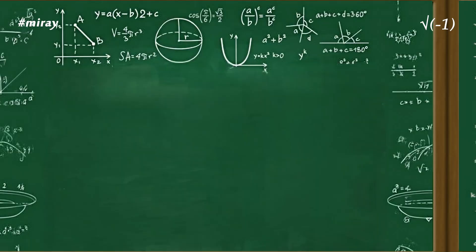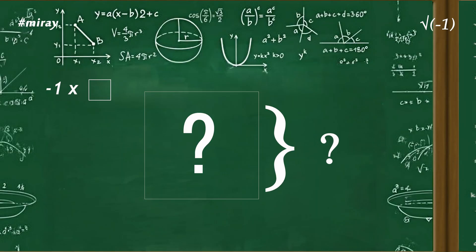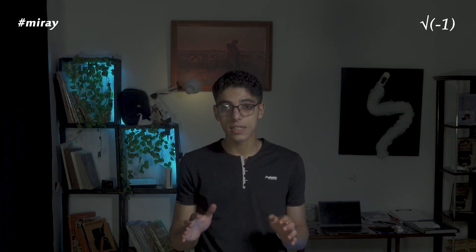The problem comes when I ask you: what is the square root of minus 1? What number multiplied by itself gives minus 1? Back to our square analogy — if you had a square with an area of negative 1, what would each side length be? It doesn't exist. The question itself doesn't make sense.